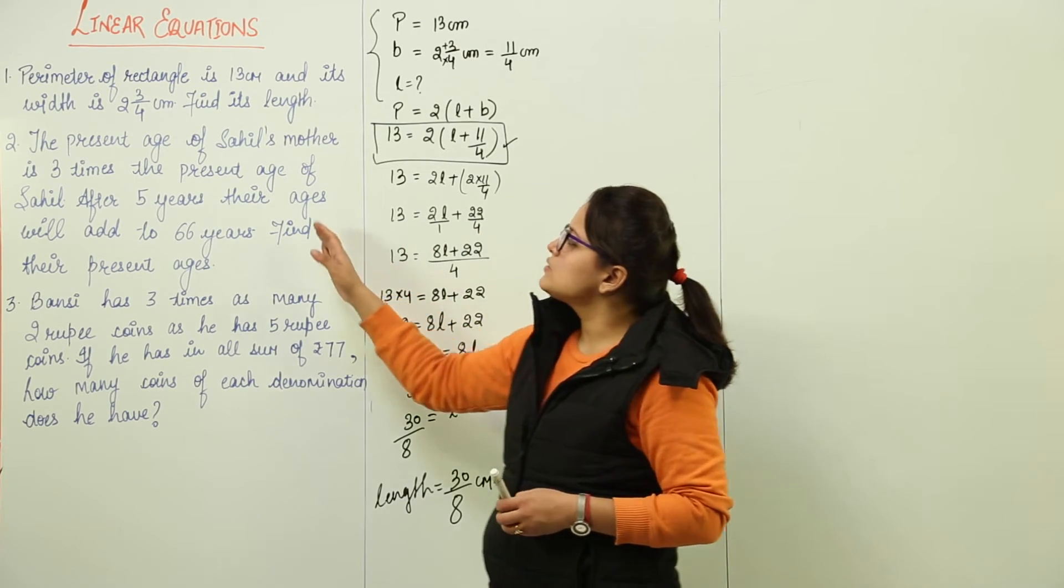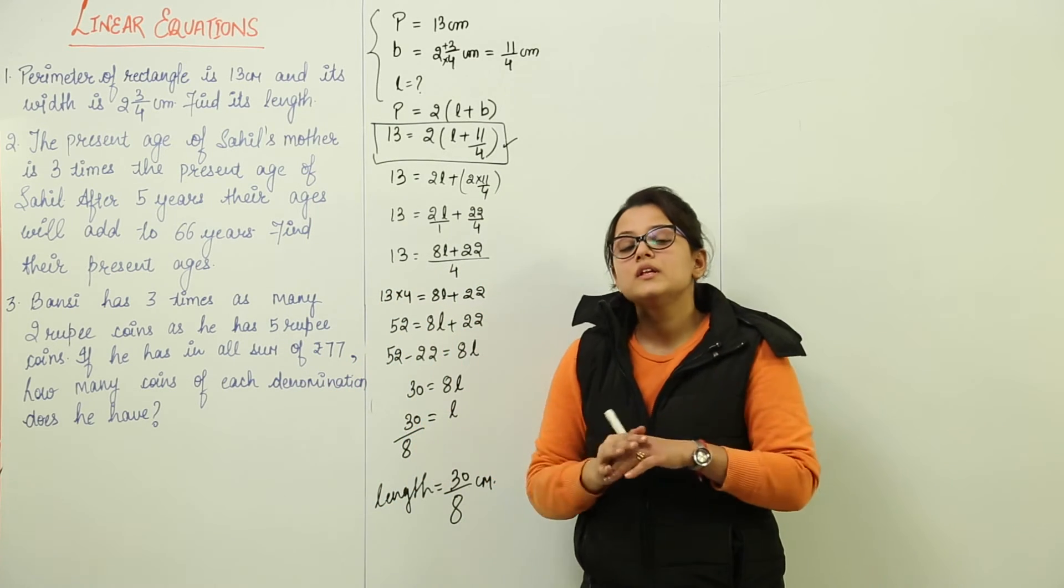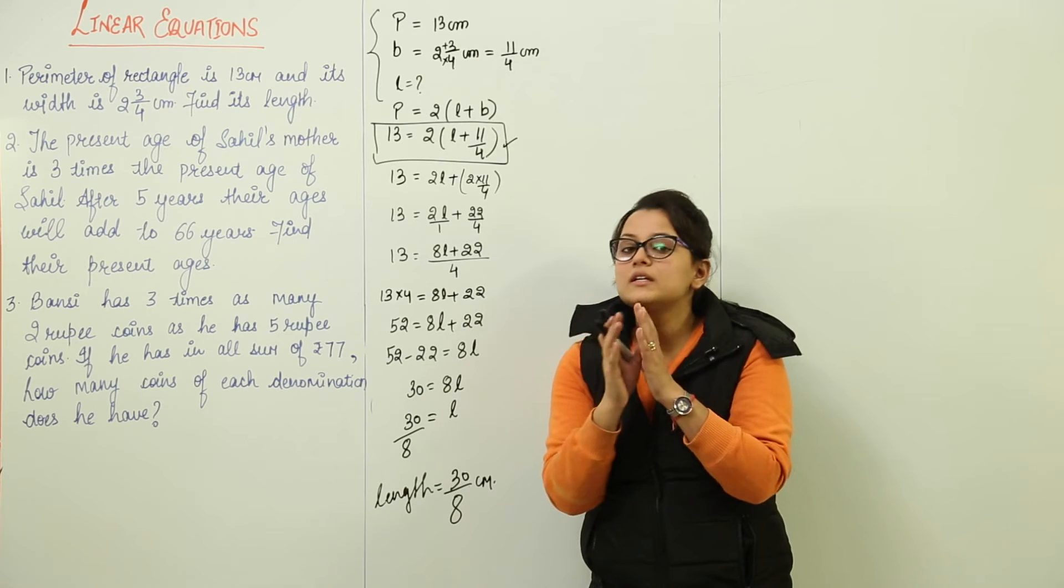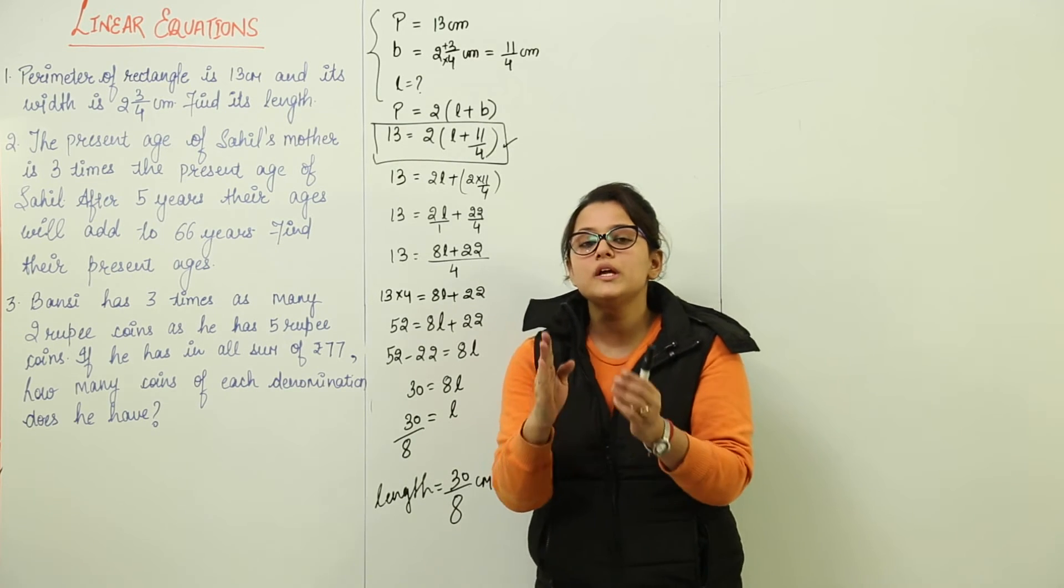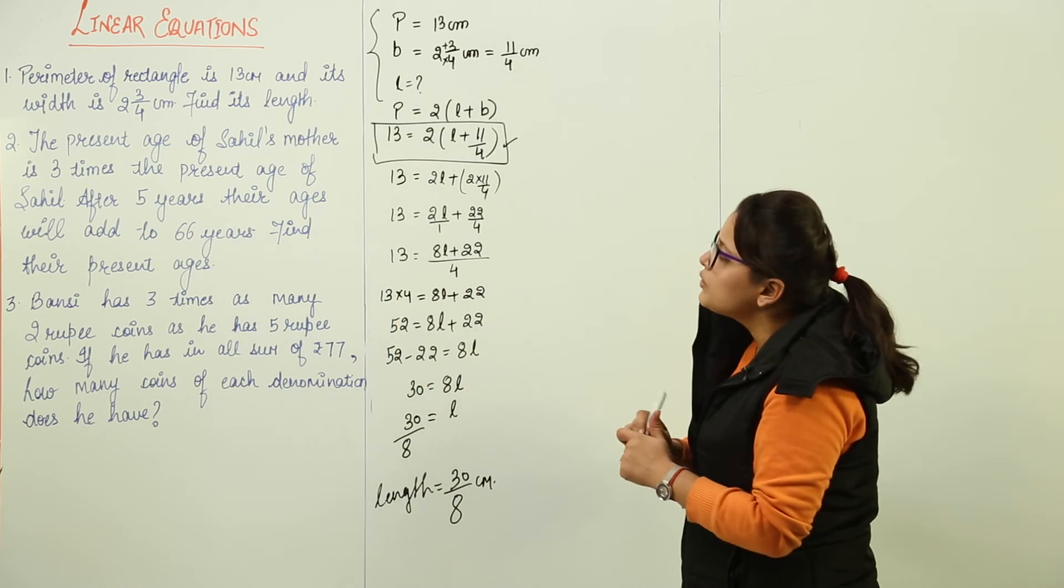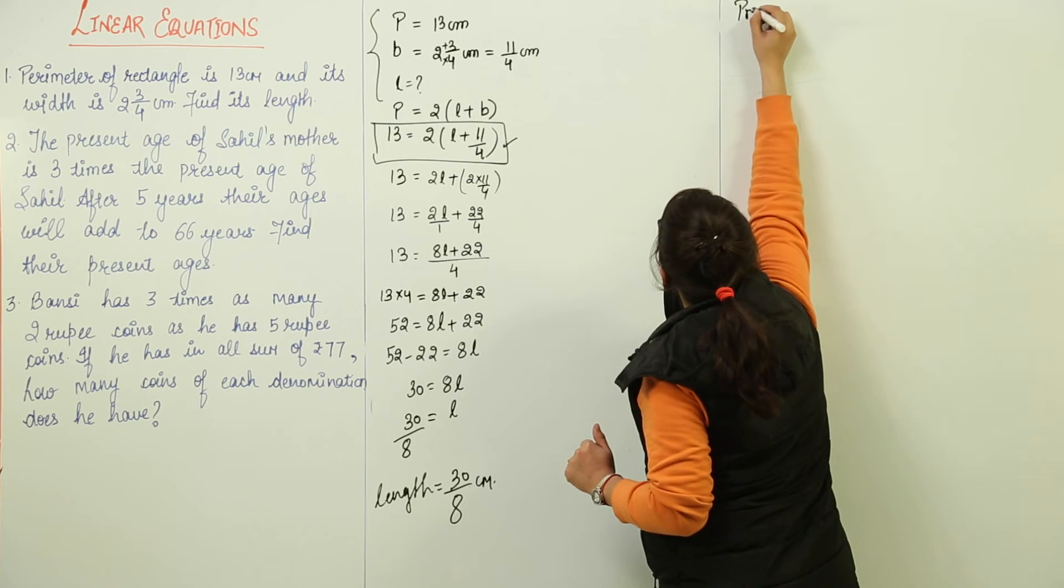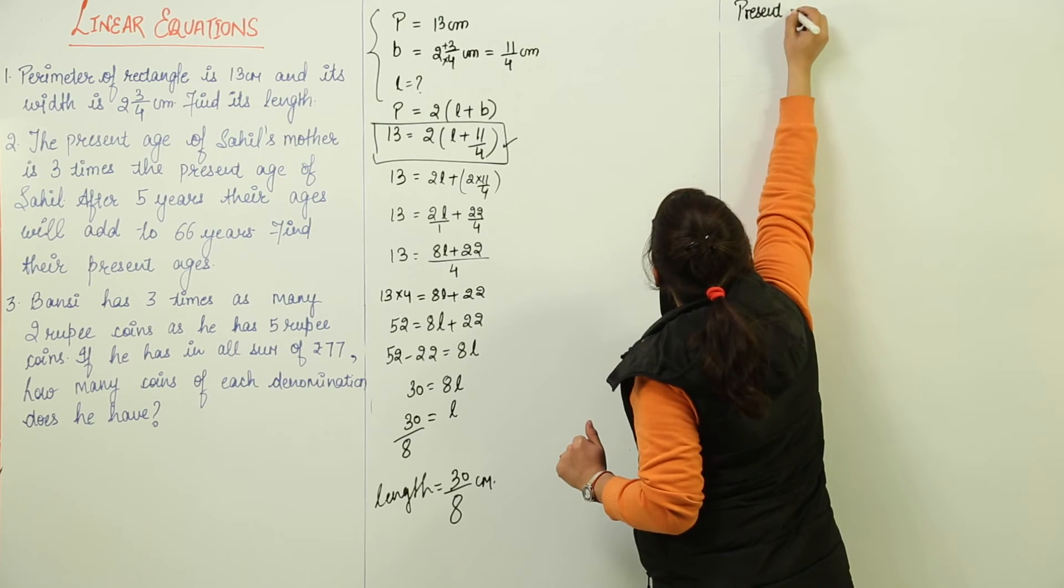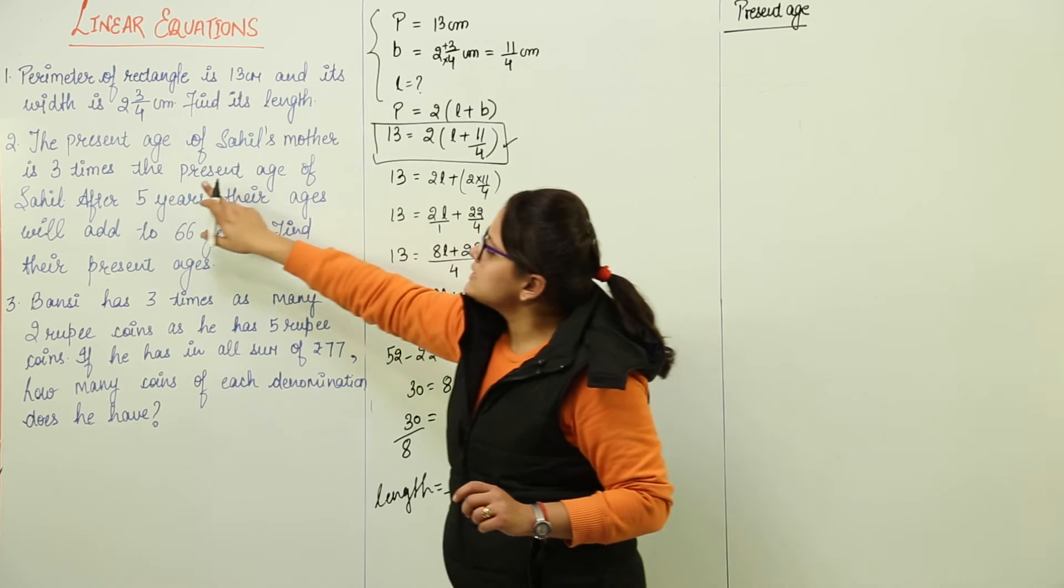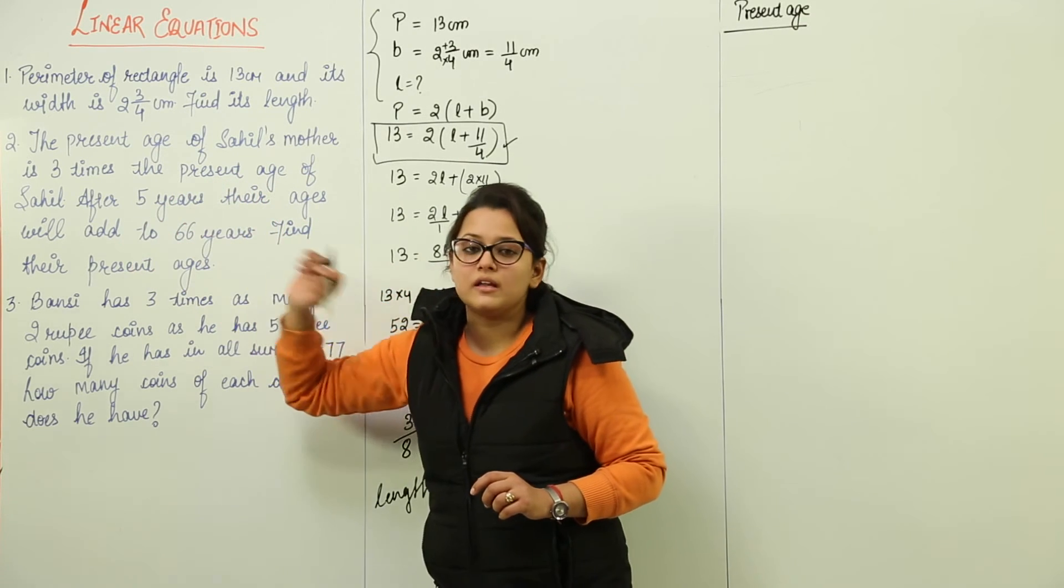Now the next type of questions will be the age questions. Before starting with this, I am already telling you that it sounds very complicated but it isn't so. I am going to tell you the way to deal every age value questions appropriately. I am taking the present age on one side and start with it. The question says that present age of Sahil's mother is 3 times the present age of Sahil.